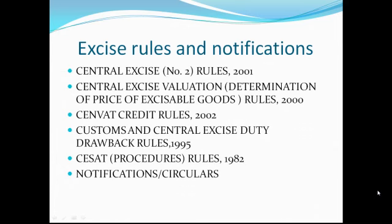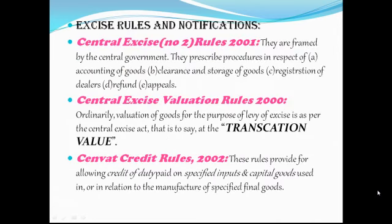Among them, the most important rules are as follows. The first is Central Excise No. 2 Rules, 2001, framed by the Central Government. They prescribe procedures in respect of accounting of goods, clearance and storage of goods, registration of dealers, refund, and appeals. Levy of Central Excise is mainly based on these rules and hence they must be strictly followed. The second is the Central Excise Valuation (Determination of Prices of Excisable Goods) Rules, 2000. Ordinarily, valuation of goods for the purpose of levy of excise is done as per the Central Excise Act, that is to say, at the transaction value. However, transaction value will be the assessable value only if the assessor and buyer are not related persons, the price is the sole consideration for sale, and goods are delivered at the time and place of removal.